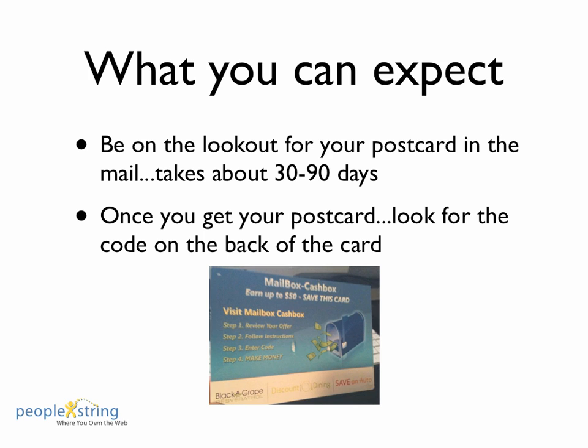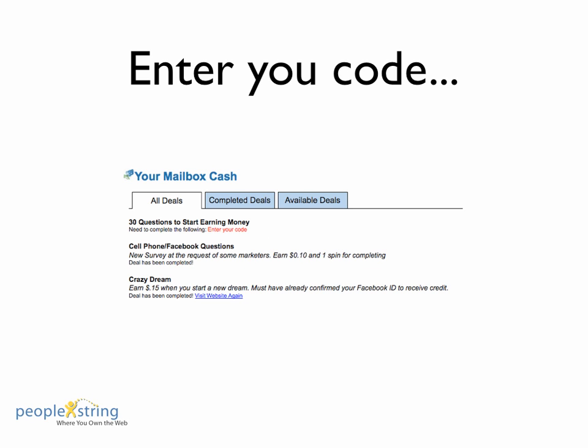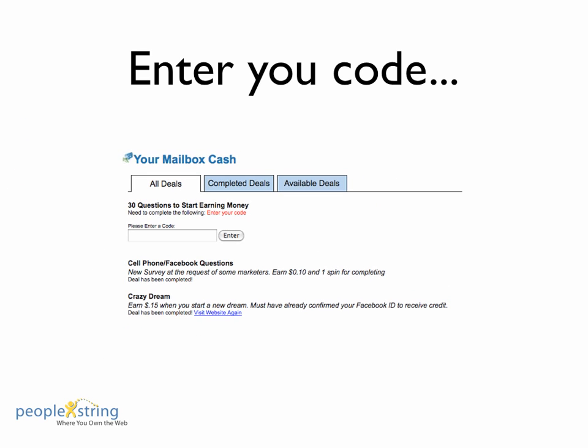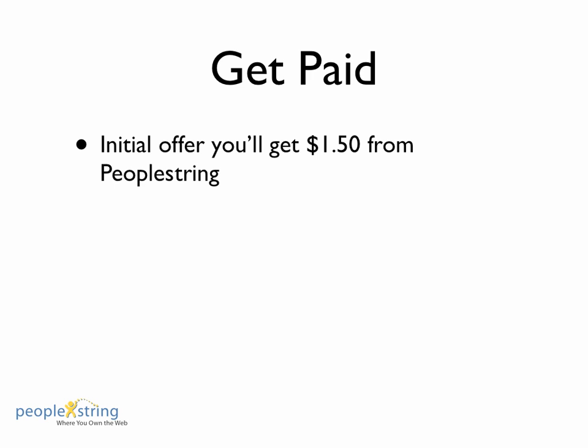It takes about 30 to 90 days for the postcard to be sent in the mail. Once you get the postcard, turn it over to the back — there's going to be a six-digit code. Come back to your Mailbox Cash Box and enter your code right where it says 'Enter Your Code.' Click on that and paste or enter the code, hit enter, and you're set.